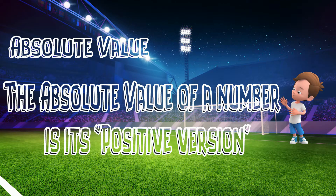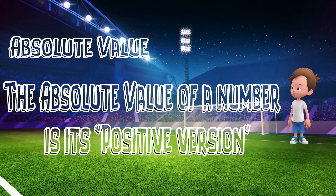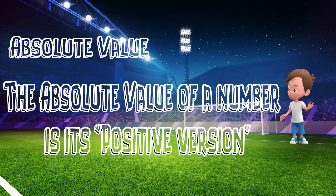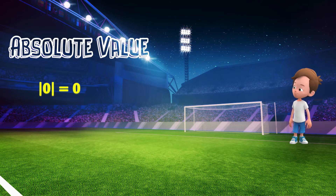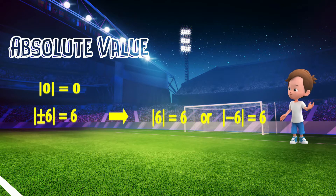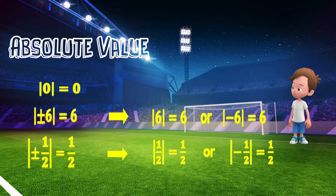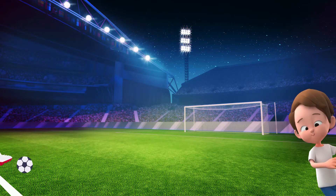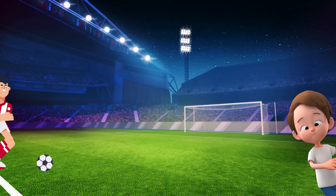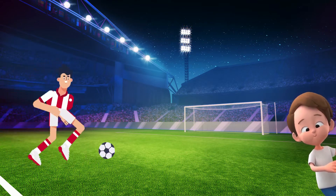Simply put, the absolute value of a number is its positive version. So we know that the absolute value of 0 is 0. The absolute value of positive or negative 6 is 6. The absolute value of positive or negative one-half is one-half.